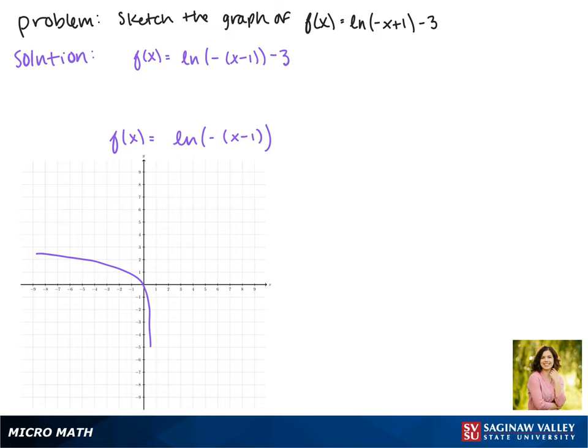Now looking at our vertical shift when we subtract 3 that shifts our function down three spaces. Now this passes through the point 0, negative 3. And notice that the asymptote shifted along with it. So this is the graph of our function.